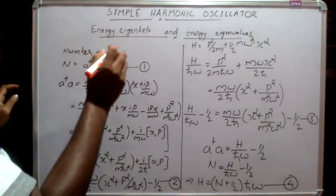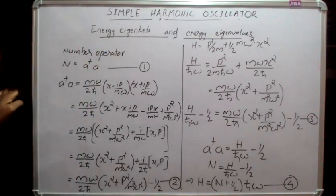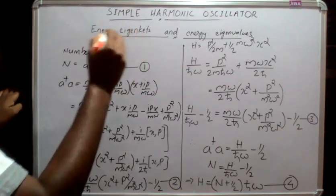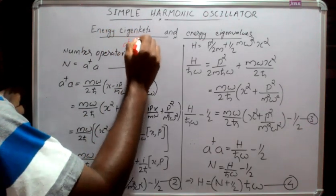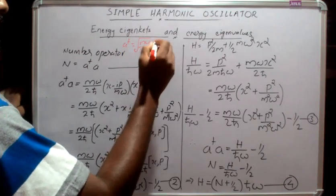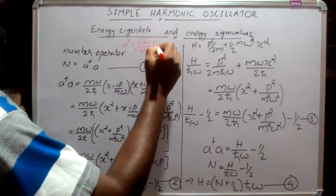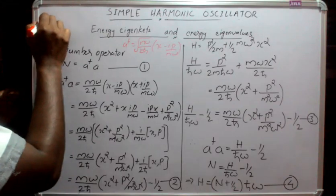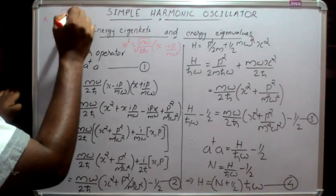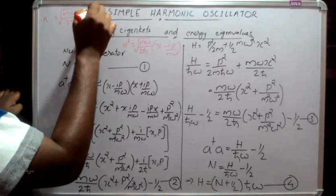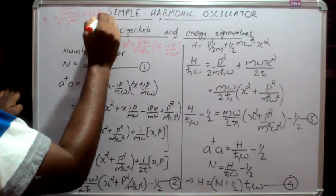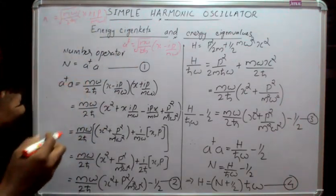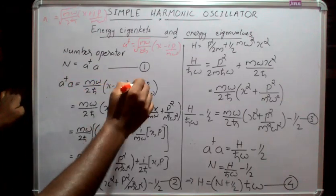Now let me introduce the number operator N = A†A. Multiplying A† = √(mω/2ℏ)(x − ip/mω) with A = √(mω/2ℏ)(x + ip/mω), we get A†A = (mω/2ℏ)(x − ip/mω)(x + ip/mω).